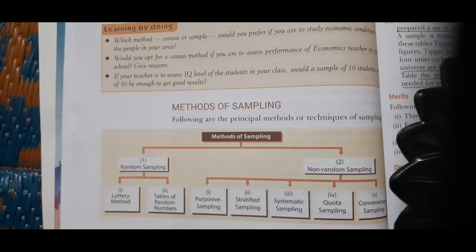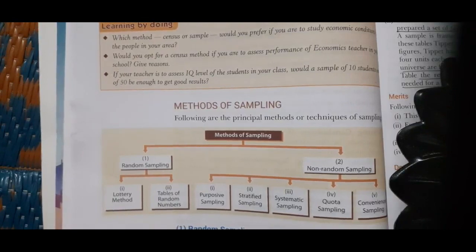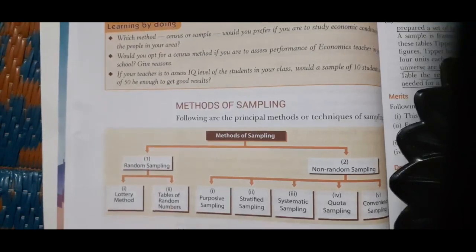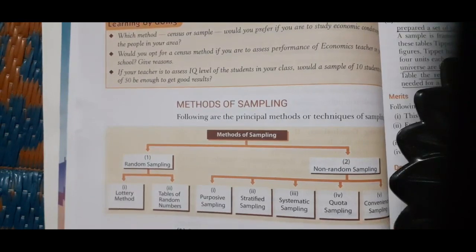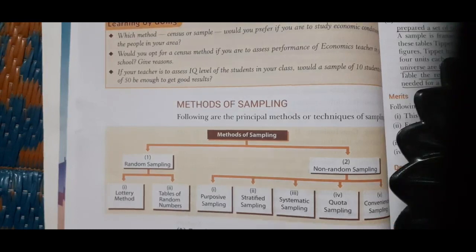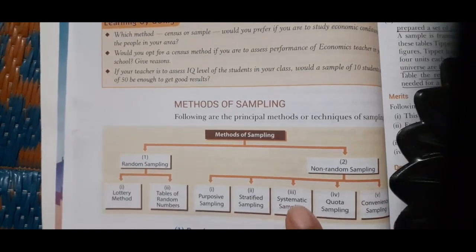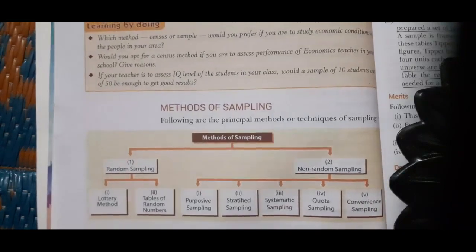The next topic is methods of sampling. It has two types: random sampling and non-random sampling. Random sampling has two types: the lottery method and tables of random numbers. Non-random sampling has five types: purposive sampling, stratified sampling, systematic sampling, quota sampling, and convenience sampling.